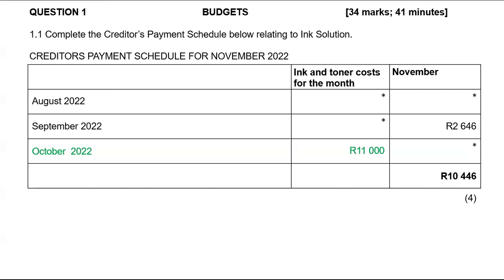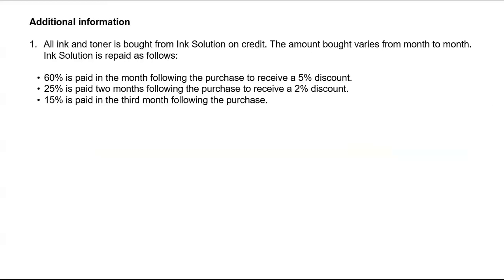The month following October is November. For credit purchases for October, we are given $11,000. We are told that if we pay in the month following the purchase, we will pay 60% and receive a discount of 5%. So of the $11,000, 60% of it will be paid in November. But of whatever will be paid in November, we are not going to pay the full 60% — we are only going to pay 95% of 60%. Please don't multiply 11,000 by 55%.